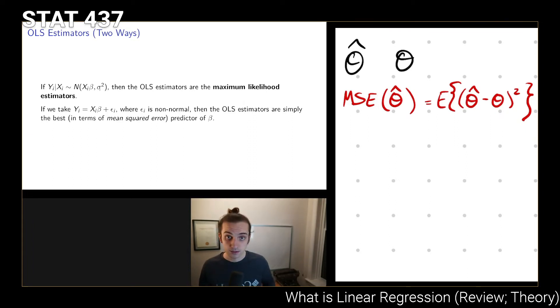If we're talking about beta hat as an estimator for beta, then we could write MSE(beta hat) = E[(beta hat - beta)^2]. The OLS estimators are going to minimize this quantity. Minimizing this quantity is a good thing because this is a measure of how close to the truth an estimator is. So the smaller the MSE, the better the estimate that we're producing is.